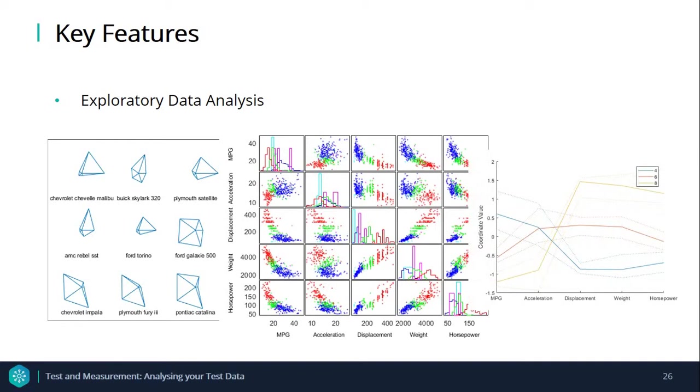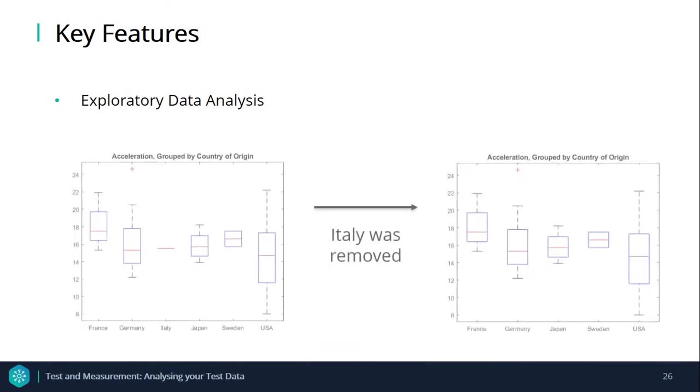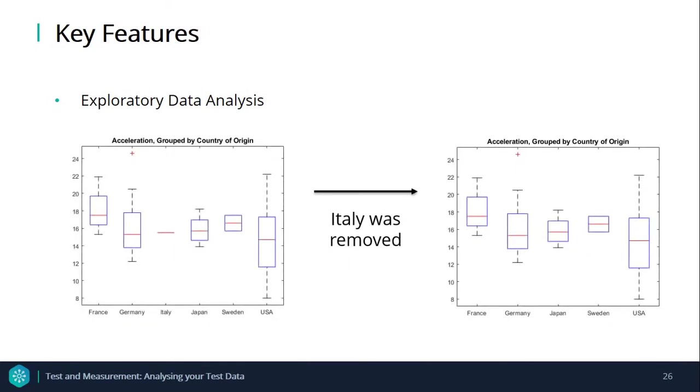The toolbox also includes specialized plots for multivariate analysis, including dendograms, bi-plots, parallel coordinate charts, and Andrews plots. You can explore data using descriptive statistics, which enable you to understand and describe potentially large sets of data quickly using highly relevant numbers.